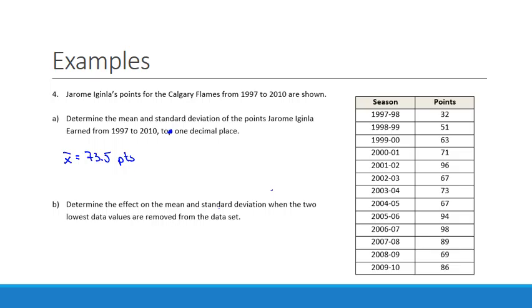Our final example. Jerome Iginla's points for the Calgary Flames from 1997 to 2010 are shown. Determine the mean and standard deviation of the points Jerome Iginla earned from 1997 to 2010 to one decimal place. Once again, I'm not doing it by hand. I'm just going to that easy calculation or using an app. My average, once I plug all that stuff in, hit calculate, would be 73.5 points. Then the standard deviation for his career in Calgary ends up being 18.3 points. So that's saying that he could be plus or minus 18 points, depending on that season.